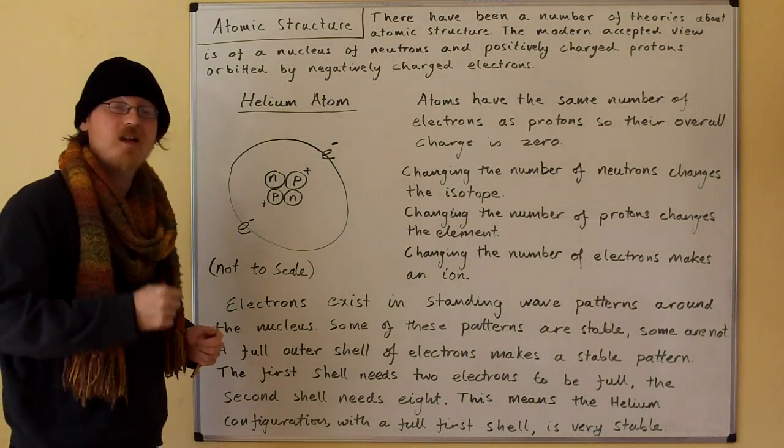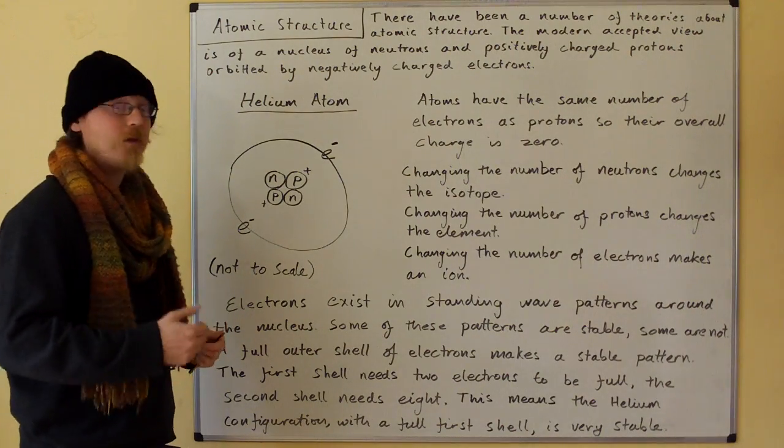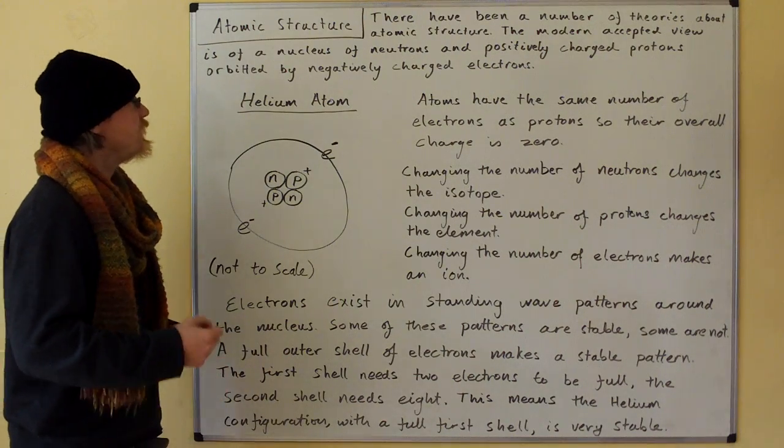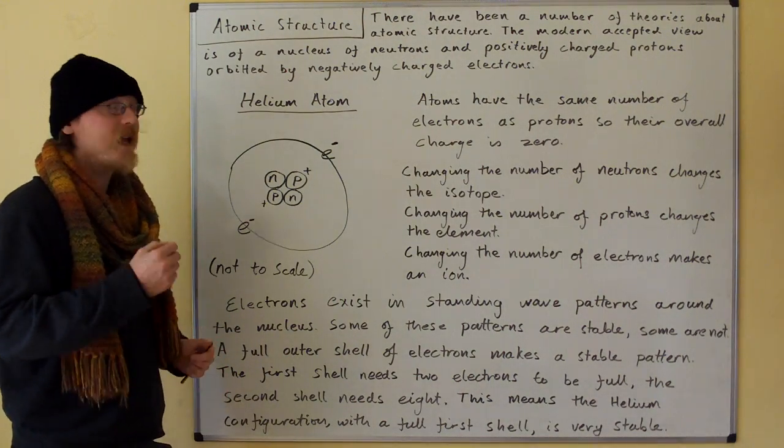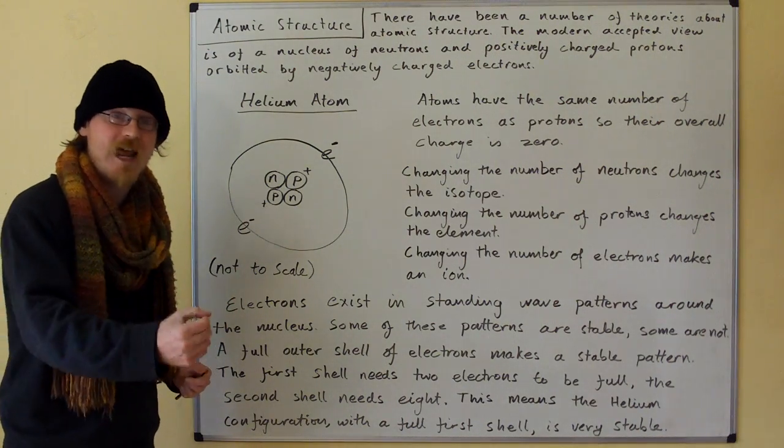Hi. Atomic structure. There have been a number of theories about atomic structure. The modern accepted view is of a nucleus of neutrons and positively charged protons, orbited by negatively charged electrons.